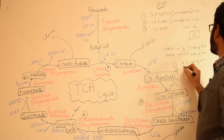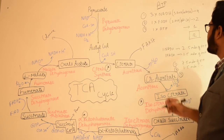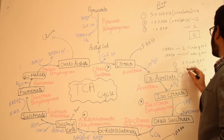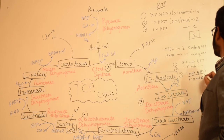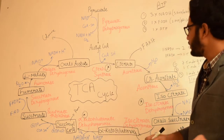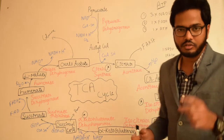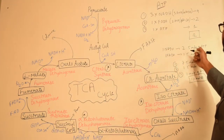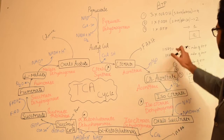From FADH₂ there is formation of 1.5 moles of ATP, and from substrate-level phosphorylation there is one mole of ATP. So the total moles of ATP generated are 7.5 + 1.5 + 1 = ten moles of ATP per acetyl-CoA molecule per citric acid cycle. In terms of number of ATP it is twelve. These values have been asked in previous exam papers, which is why I'm elaborating on them.